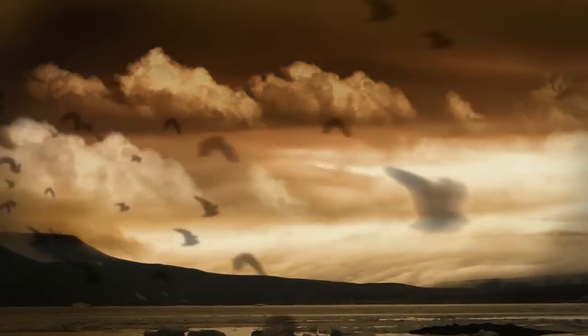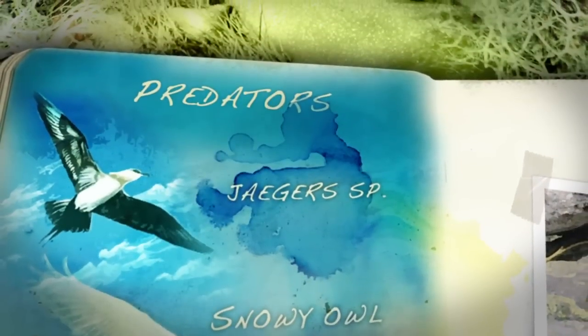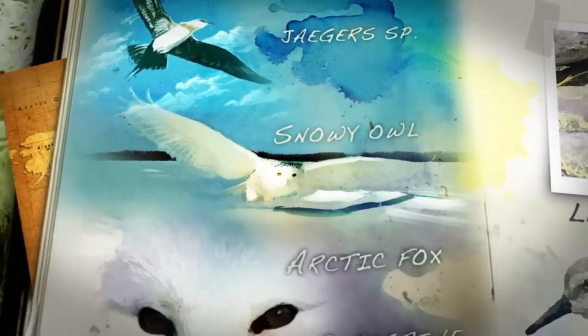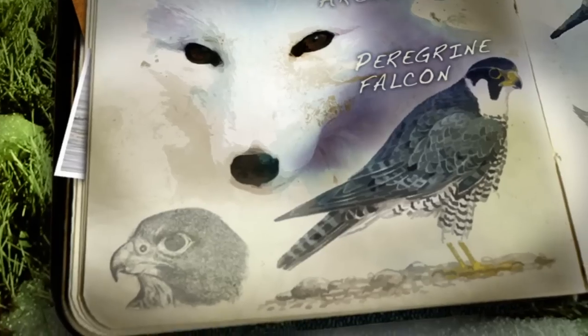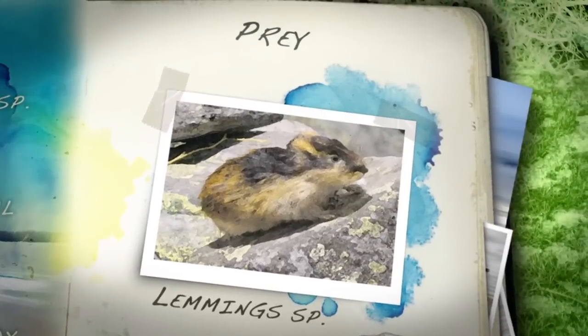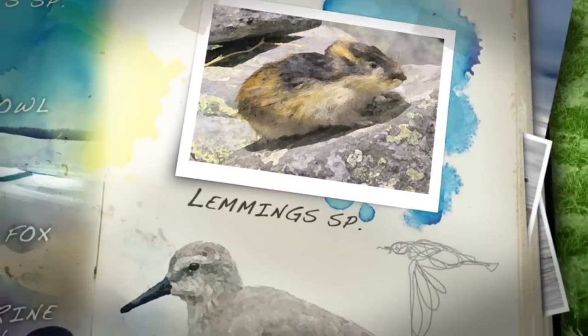There is a correlation between the population cycles of predators and their prey. Populations of birds of prey and lemmings go through ups and downs together, in a cycle that repeats itself every three to four years. These population patterns are called biological cycles.